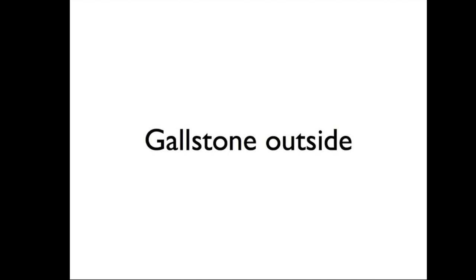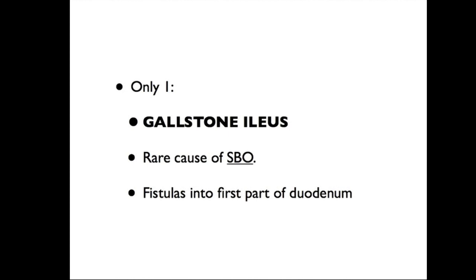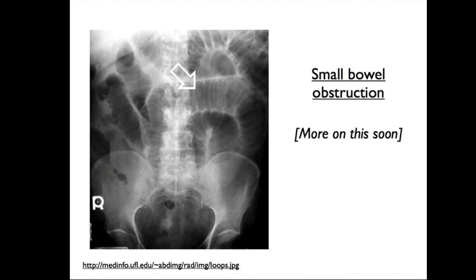Outside the biliary tract, the main complication is gallstone ileus. This is when a large stone fistulates into the first part of the duodenum, causing a small bowel obstruction visible on abdominal radiograph as dilatation of the small bowel with valvulae conniventes.